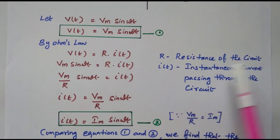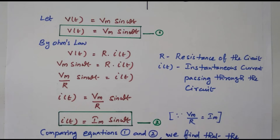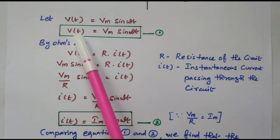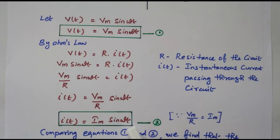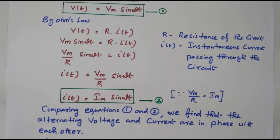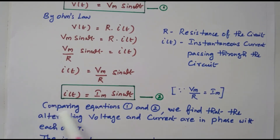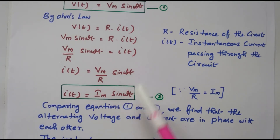Comparing equation 1, V(t) = Vm sin(ωt), and equation 2, I(t) = Im sin(ωt): the angle in both equations is ωt, and both angles are the same. This means the current and voltage are in phase with each other. Comparing equations 1 and 2, we find that the alternating voltage and current are in phase, which we already confirmed from the waveform. By analyzing these two equations, we know that both are in phase.